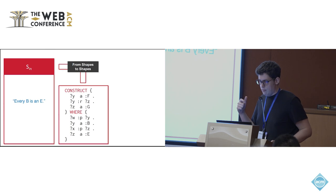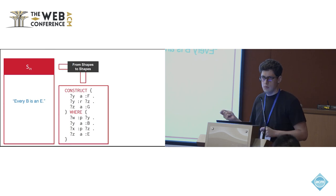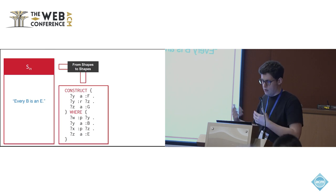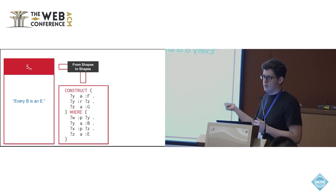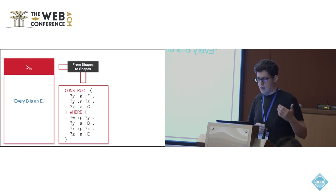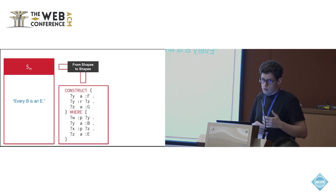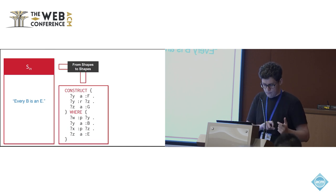We might also have some input shapes. In this example, a single shape that says every B is an E. I'm using informal language here to describe SHACL, but in our paper we support a normal subset of SHACL. This shape means we match on class B, and all nodes of class B must also have type E. The question becomes: how can we construct the respective output shapes that hold on all output graphs? To do this, we need to combine knowledge from our input shapes and from the query.